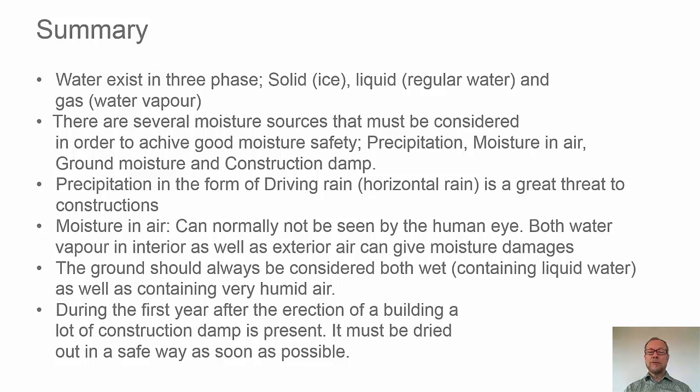Precipitation in the form of driving rain, horizontal rain, is a great threat to constructions. Moisture in air can normally not be seen by the human eye, but water vapor in interior as well as exterior air can give moisture damages. The ground should always be considered both wet, by containing liquid water, as well as containing very humid air.